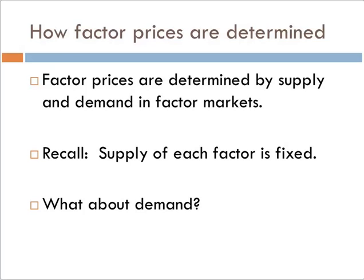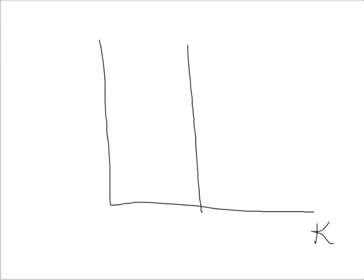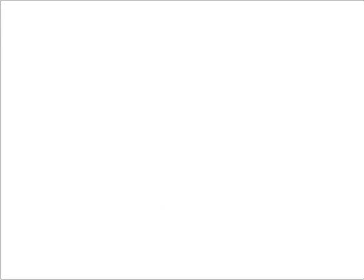How are factor prices determined? Factor prices are determined by supply and demand of factors. The supply of each factor is fixed, so the supply curve is perfectly vertical at K-bar for capital and L-bar for labor — no matter what the price is, the quantity supplied is always K-bar. The same holds for labor. But we still need to determine demand for each factor.